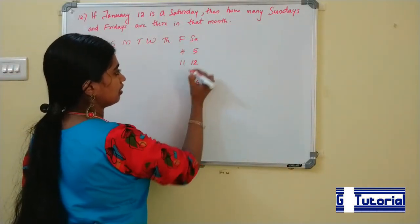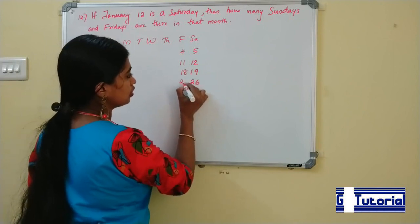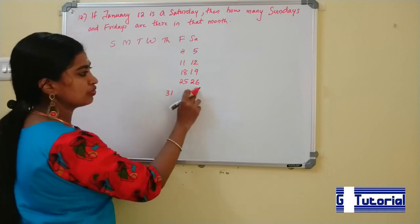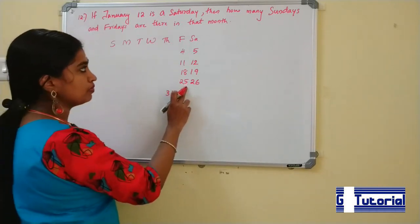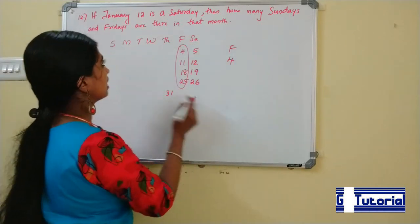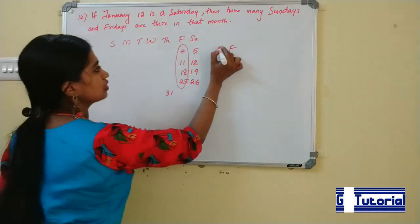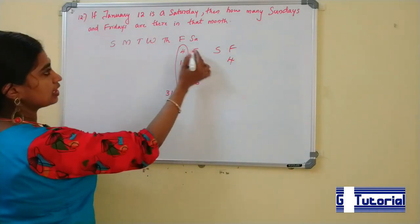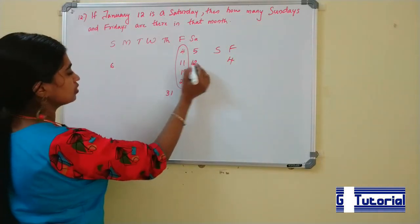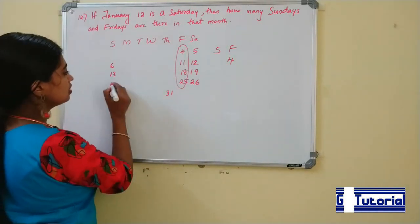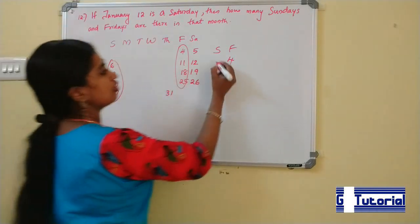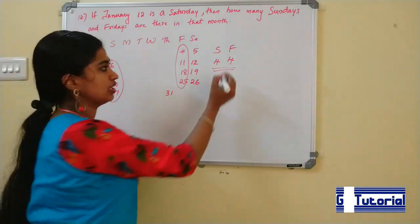The dates are: 4, 11, 18, 25, 31 — that's 6 plus 5, giving 31 days. How many Fridays? 4 Fridays. How many Sundays? The 5th Saturday, 6th Sunday — 13th Sunday, 27th Sunday. 8th Friday. That is the answer.